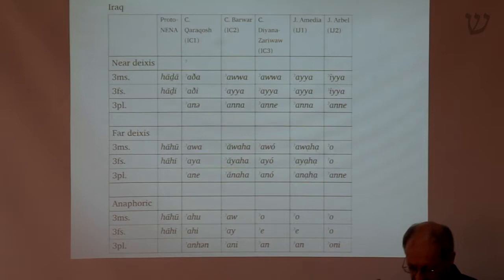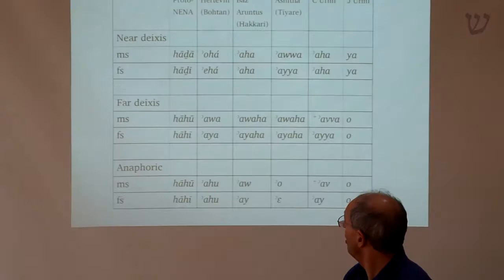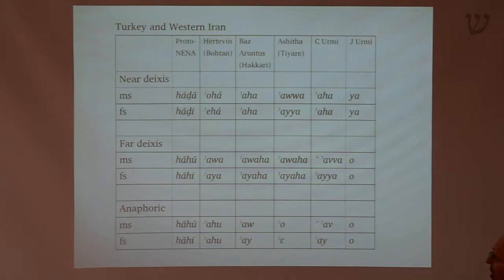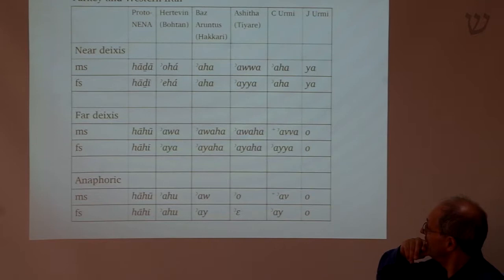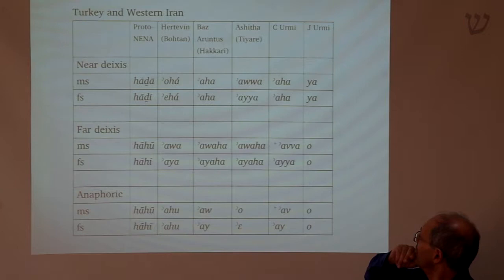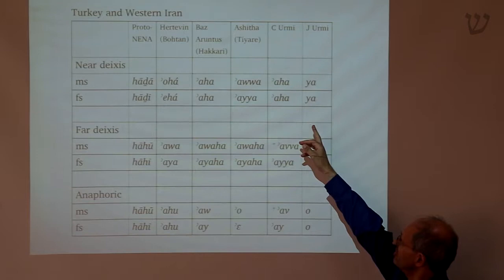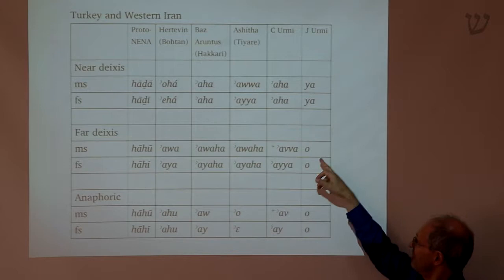There are many different forms of demonstratives across the NENA dialects. Here are some dialects in Turkey and western Iran. In Herkavin, the near-deixis is 'o-ha', far-deixis is 'awa', and anaphoric is 'ahu'. But in Christian Urmi, 'ah-ha' is far-deixis and 'of' is anaphoric. The Jews of Urmi have only two sets: 'ya' for this, and 'or' for far-deixis and anaphoric.